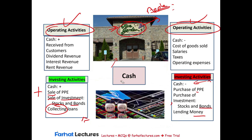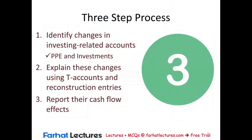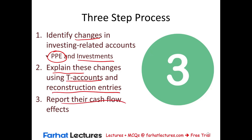What we're looking at is two items when it comes to investing activities: property, plant, and equipment, and long-term investments — investments in stocks and bonds. There's a three-step process to compute cash flow from investing activities. First, identify the changes in investing-related accounts — PP&E and investment accounts. Second, explain the changes using T-accounts and restructuring entries. Then, report the cash flow effect. This is what we will do in this session.